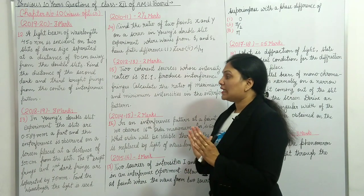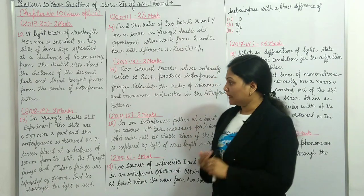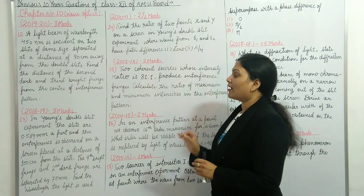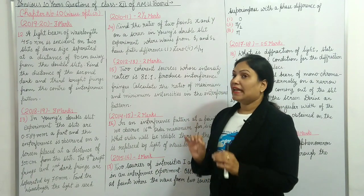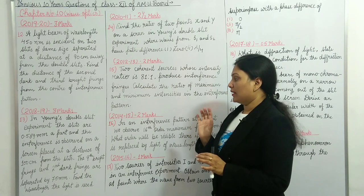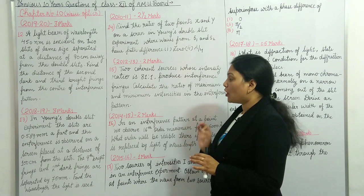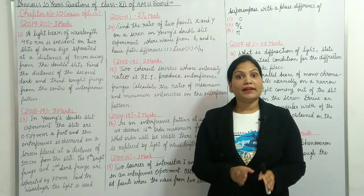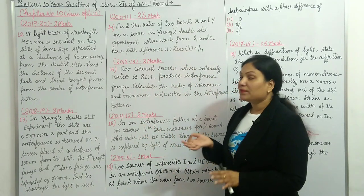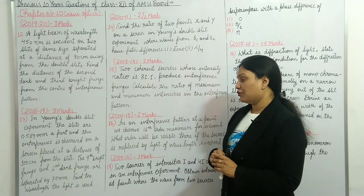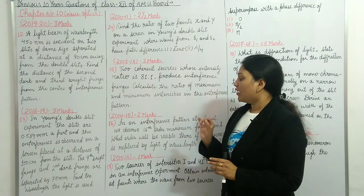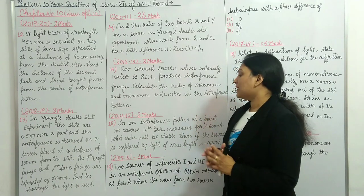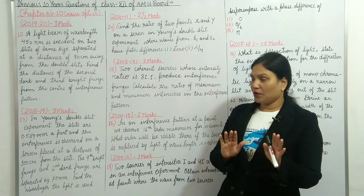Question number thirteen: in Young's double slit experiment, the slits are 0.589 mm apart and the interference is observed on a screen placed at a distance of 100 cm from the slits. The ninth bright fringe and second dark fringe are separated by 7.5 mm. Find the wavelength of light used.